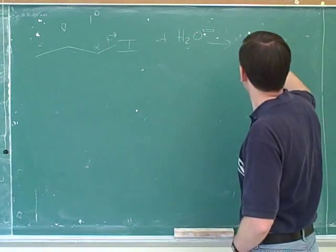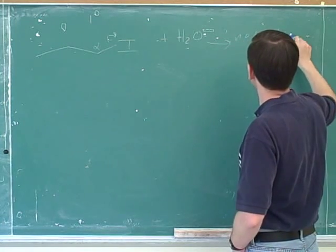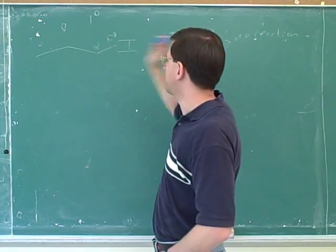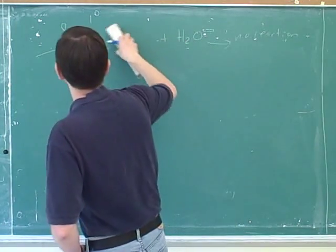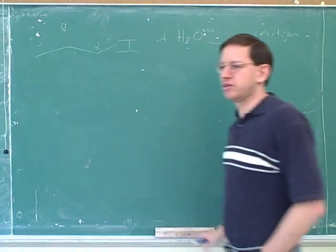So, this is going to be no reaction. Why can't it do an SN1? Because that would form the primary carbocation. So why can't it do an SN2? Well, let's talk that through a little bit.